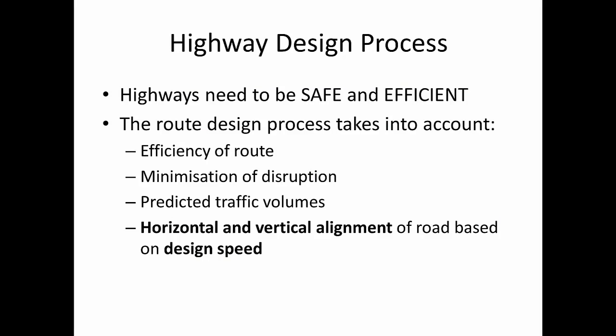Highways need to be safe and they need to be efficient. They need to be driven on safely and they need to not cost too much money. Highway projects can be very expensive because there is a lot of earthworks involved, and earthworks are some of the most expensive types of work on any construction project. When we look at route design processes, we consider four principal ideas: the efficiency of the route (mainly earthworks), minimisation of disruption to the surrounding area, prediction of traffic volumes, and the horizontal and vertical alignment of the road based on design speed — and it's this last point that we look at in this course.